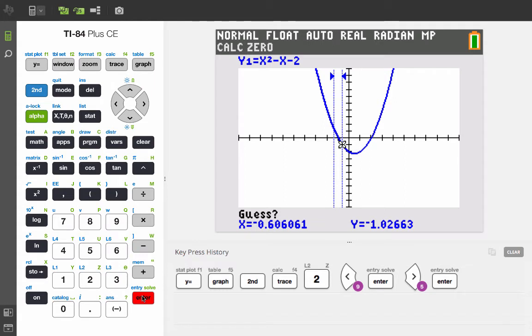Next, we're asked for a guess. So this time, as before, we'll move the cursor close to where the zero is and then press enter. And we'll see that this zero is at the point negative one, or y equals zero.